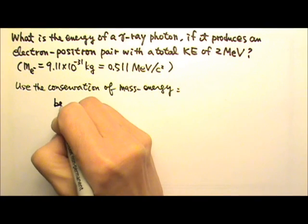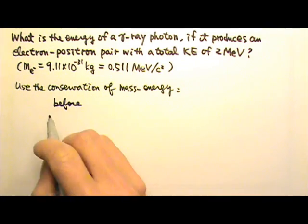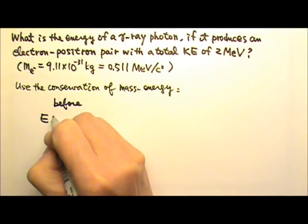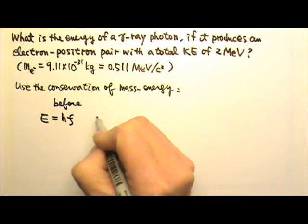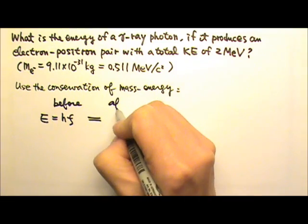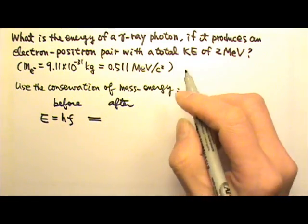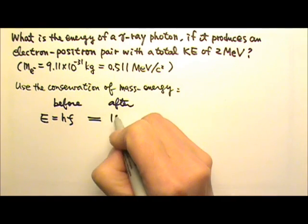So let's see, before the pair production, we have a photon with photon energy. After the pair production, we have two particles with kinetic energy.